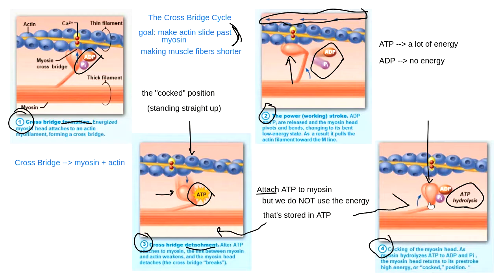The four stages of the crossbridge cycle — the goal is to help me slide actin past myosin to do muscle contraction. Once myosin gets back to the cocked position in step four, as long as there's a place for it to attach to actin, absolutely it is going to. The circle starts all over again. There's nothing in particular that tells ATP to attach to the myosin head — if ATP is floating around and there's an opening, it will just attach.